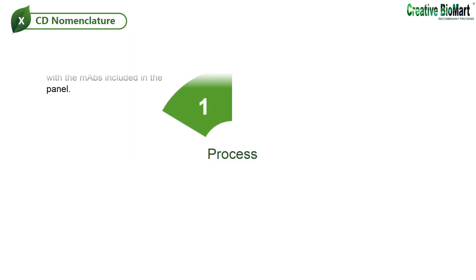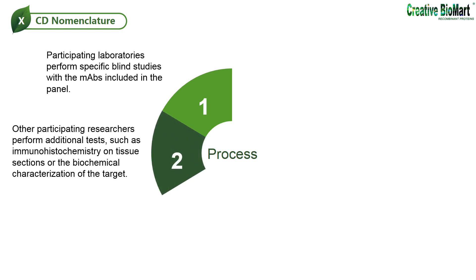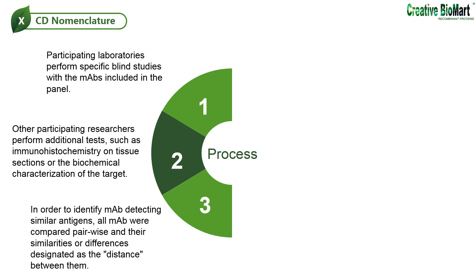Participating laboratories perform specific blind studies with the monoclonal antibodies included in the panel. This allows for the testing of monoclonal antibody reactivity with multiple cell types using multiple color flow cytometry. Other participating researchers perform additional tests, such as immunohistochemistry on tissue sections, or the biochemical characterization of the target molecules using immunoprecipitation, western blots, or binding studies to the recombinant target molecules. In order to identify monoclonal antibodies detecting similar antigens, all monoclonal antibodies were compared pairwise, and their similarities or differences designated as the distance between them. Distance was defined as the mean absolute difference in reactivity between any two monoclonal antibody pairs tested against cell targets included in the study.